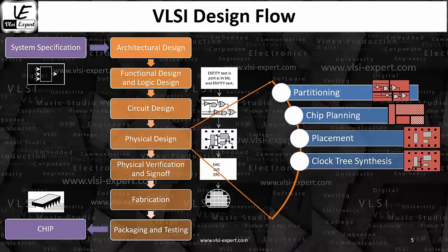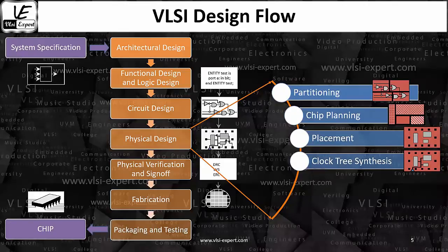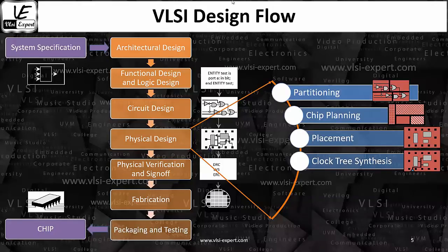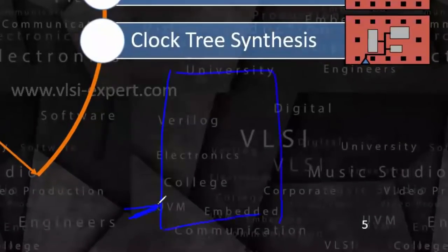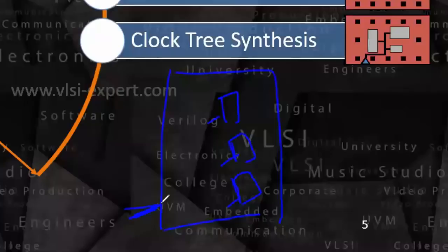Then clock tree synthesis. Most of you already know what a clock is. In our design we have flip flops and combinational logic, and all the flip flops have a clock signal at the clock pin. This is basically building a clock network. After placement, you have placed a number of D flip flops in your design, but those D flip flops are not yet connected with the clock signal. You have a chip with a clock pin and all these flip flops — how are you going to connect the clock pin of these flip flops with the clock source? That particular process is basically clock tree synthesis.